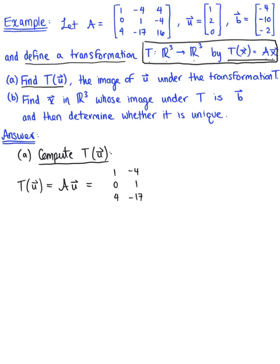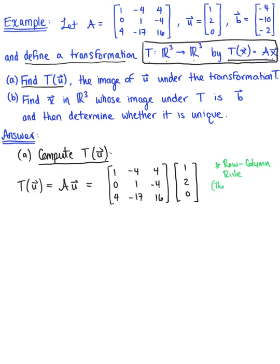The third column is 4, negative 4, 16. We are multiplying this 3 by 3 matrix by vector U, which is 1, 2, 0. To compute this matrix-vector multiplication, I'm going to apply the row-column rule, also known as the dot product rule. With this row-column rule, we multiply each row of matrix A by this column vector.